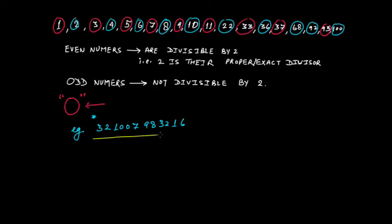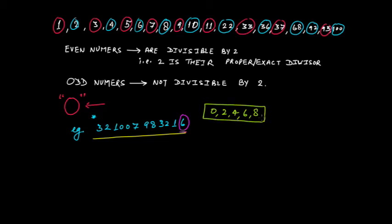In this number, you have 6 at the unit place. If the unit place of any number contains the digits 0, 2, 4, 6 or 8 — if any one of these digits is present at the unit place — then that number would be an even number because that number would be divisible by 2. In this case, you have 6 at the unit place, and therefore this number is an even number.